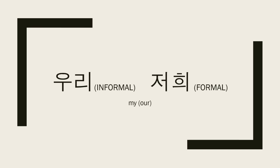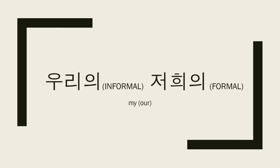There's another way to say 'my,' which is 우리 and 저희. You might be asking — doesn't 우리 and 저희 mean 'our,' not 'my'? And yes, that is true. However, it depends on the context. You might also ask, don't you need to add 의 to make it possessive? 우리의 and 저희의 are correct — those are definitely 'our.' However, it's too long, so Koreans usually shorten it to just 우리 and 저희.